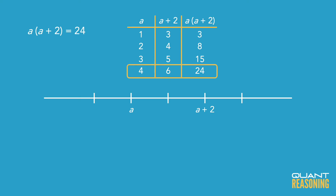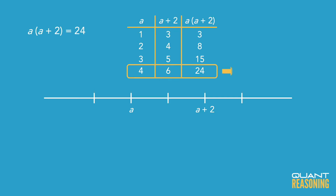So that means it's possible that A is 4 and A plus 2 is 6. The only thing you have to remember is to consider the mirror image. The mirror image of 4 and 6 would be negative 6 and negative 4. A would be negative 6 and A plus 2 would be negative 4. So the inference we can make right off the bat is that A is either 4 or negative 6.